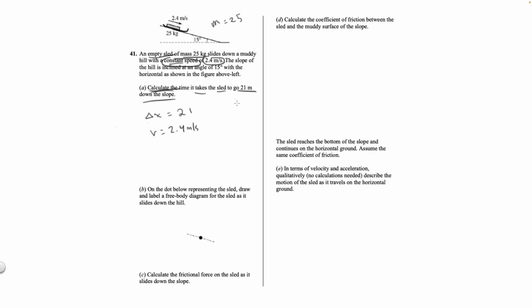Since it's constant speed, acceleration is zero. We use the equation velocity equals delta x over delta t, and rearrange to get delta t equals delta x over velocity. So t equals 21 over 2.4, which gives t equal to 8.75, rounding to 8.8 seconds.